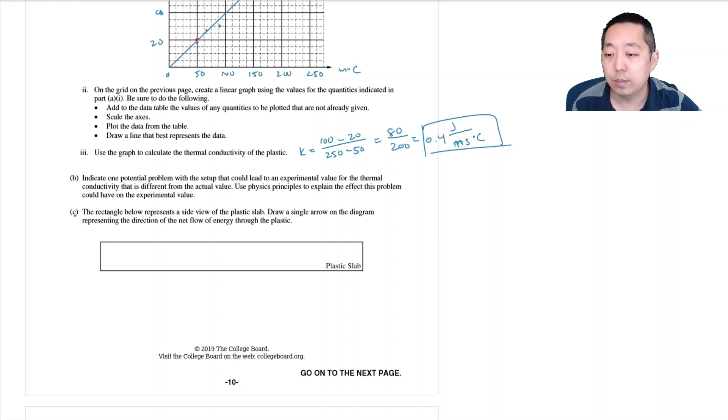The rectangle below represents a side view of the plastic slab. Draw a single arrow on the diagram that represents the direction of the net flow of energy through the plastic. So just upward. Because the heat's being added to the bottom and it's flowing upward.